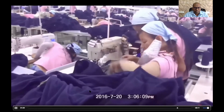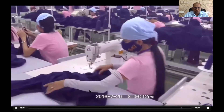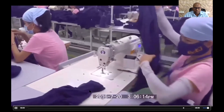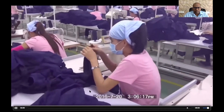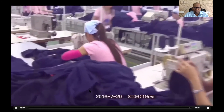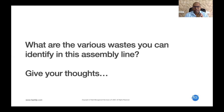Whenever the needle moves and stitching is happening, that's the work. See how much WIP they have. Whenever the machine stops, the work also stops. So what are the various wastes you can identify? Please share in the comment box — what are the various wastes you can identify in this assembly line?